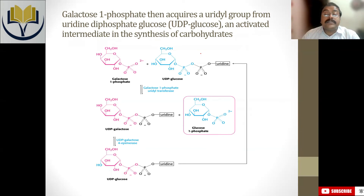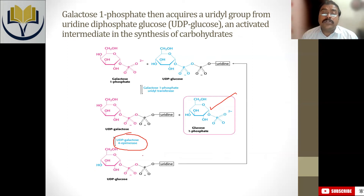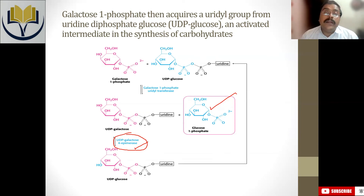Galactose-1-phosphate uses UDP-glucose and shuffles: UDP-glucose is converted into UDP-galactose, while galactose-1-phosphate is transferred into glucose-1-phosphate. Glucose and galactose interchange their positions. The UDP-galactose is then converted back to UDP-glucose by the enzyme UDP-galactose-4-epimerase. Glucose and galactose are epimers of each other, and the epimerase converts UDP-galactose back into UDP-glucose, which can then help convert another galactose-1-phosphate into glucose-1-phosphate.